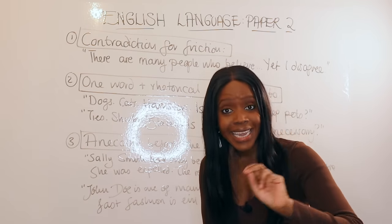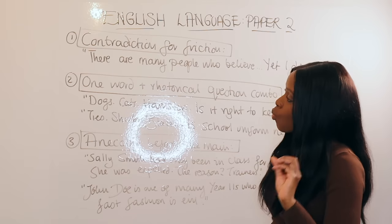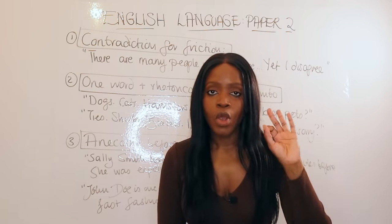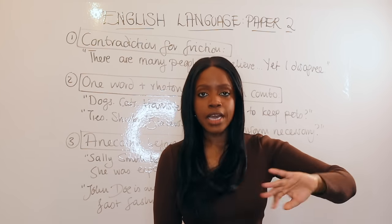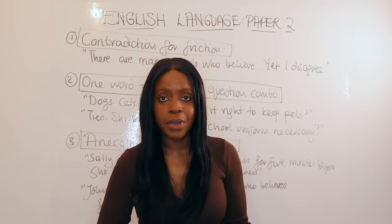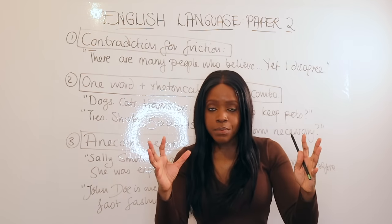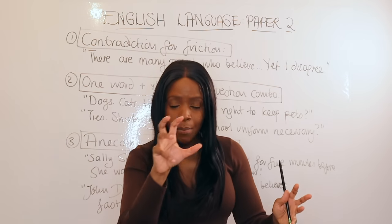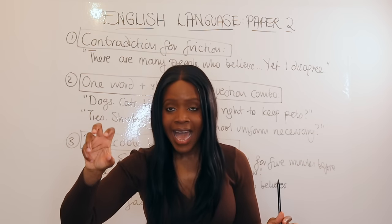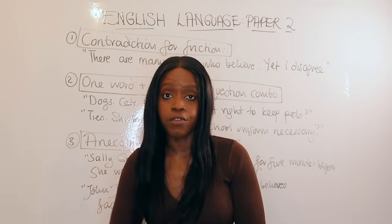The second way you can start any persuasive writing essay is what I call the one word and rhetorical question combo. You decide the topic you're given — for example, another very popular topic is school uniform: should it be banned or not? You begin by starting with three one-word sentences, then add a rhetorical question to follow on.